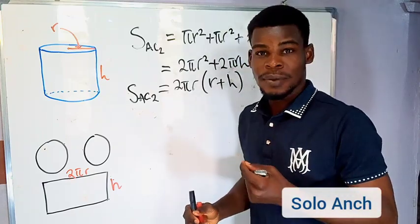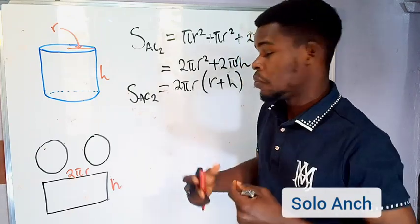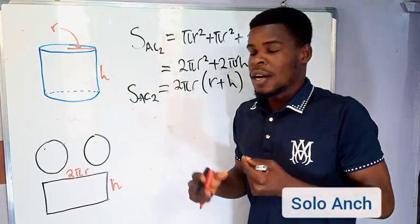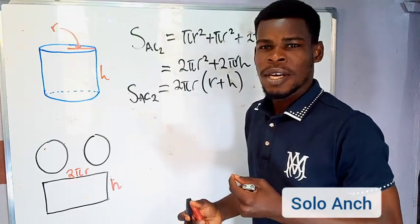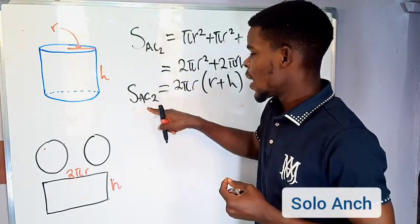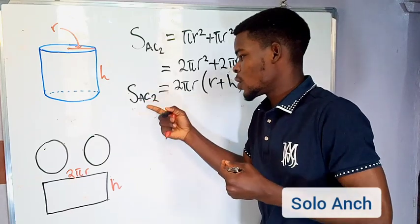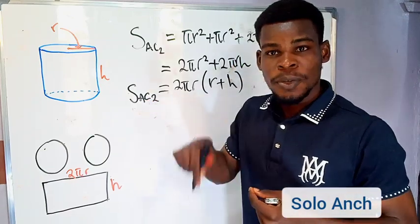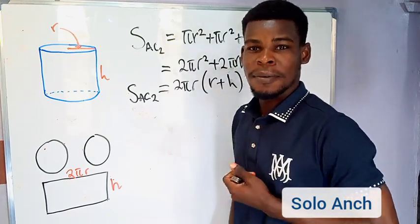Thanks for watching! In the next video we'll find the surface area when both ends are open, and when one end is open — you can try that last one as practice. Put your answer in the comment section below, and I'll see you in the next video.